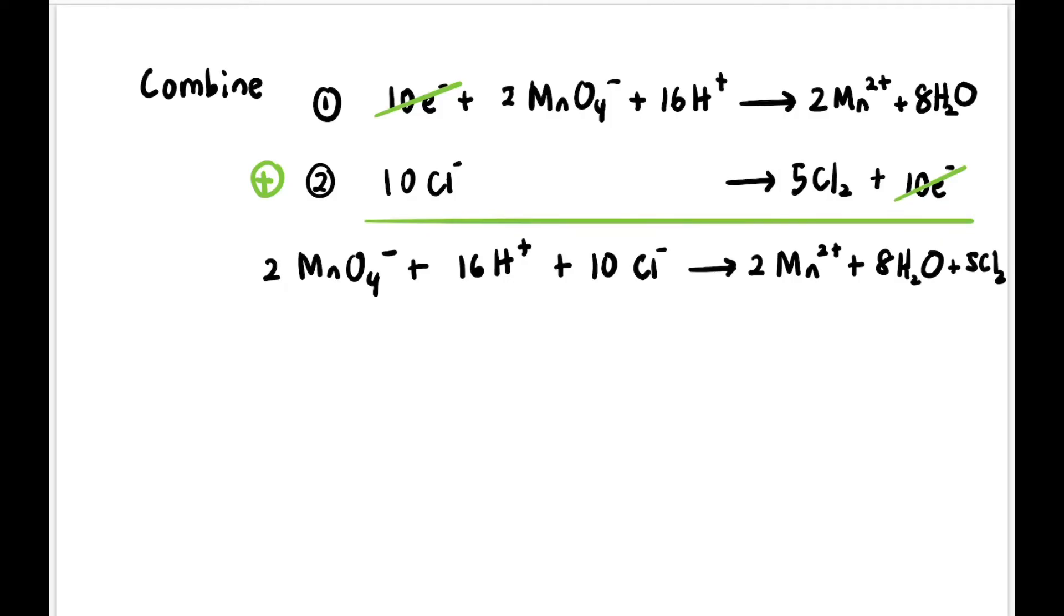We get 2MnO₄⁻ + 16H⁺ + 10Cl⁻ on the left, producing on the right 2Mn²⁺ + 8H₂O + 5Cl₂. Now let's check the charges on the left and on the right. On the left we have -2, and then +16, -10, and then +4.